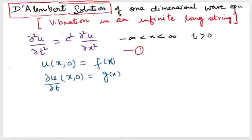First, identification of the wave equation is important. Since x has no boundary — it's an infinite string — we only have initial values. At position x when time is 0, we have f(x) as the initial position, and the initial velocity is given separately. That is why we call these initial values.